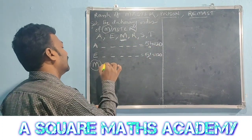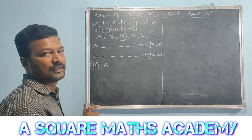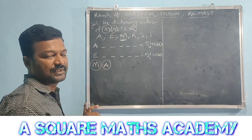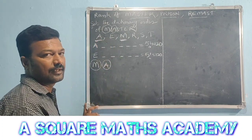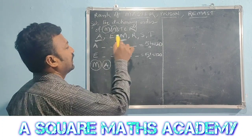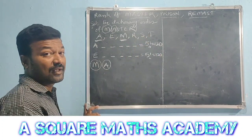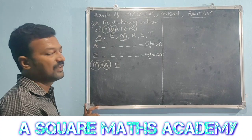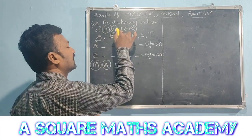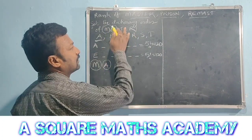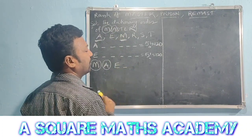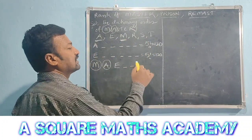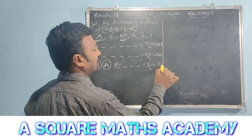Now fix M in the first place. The second place: consider words beginning with M-A. Fix A in second place, then the remaining letters are E, R, S, T. These 3 letters can be arranged in 3 places — 3 factorial equals 6.